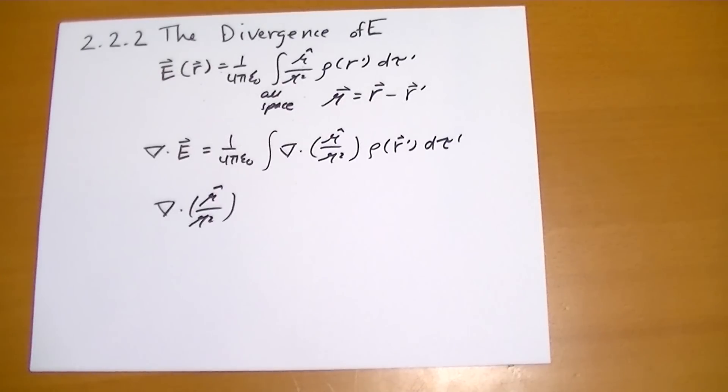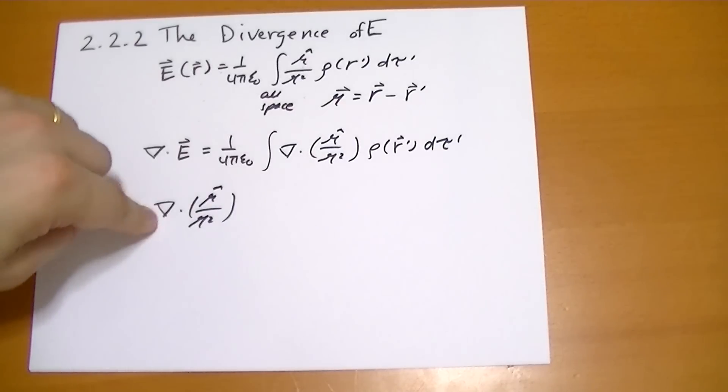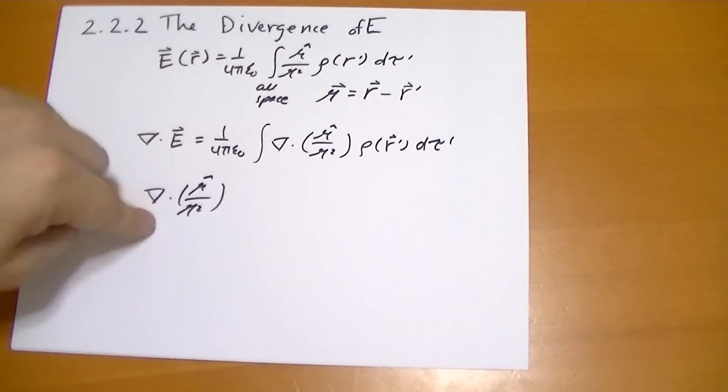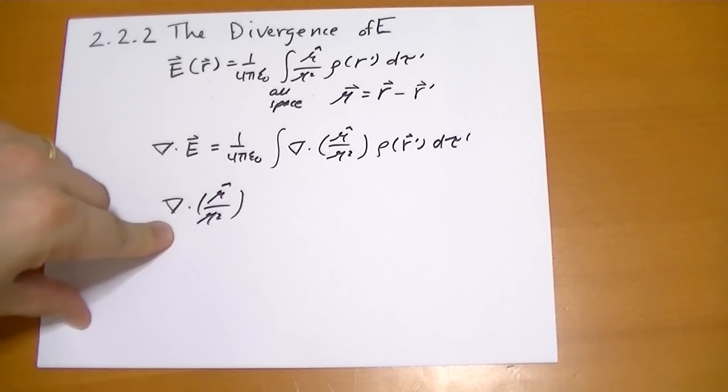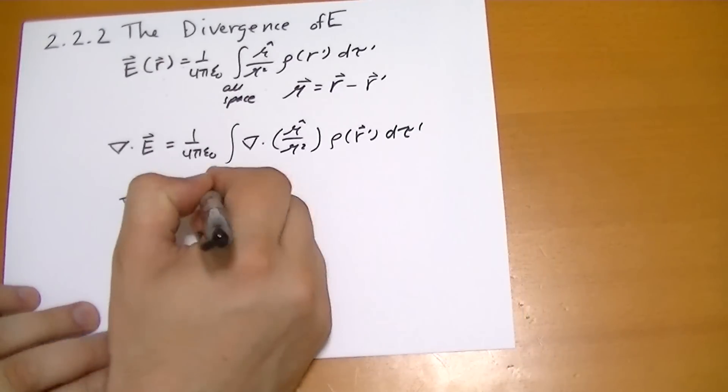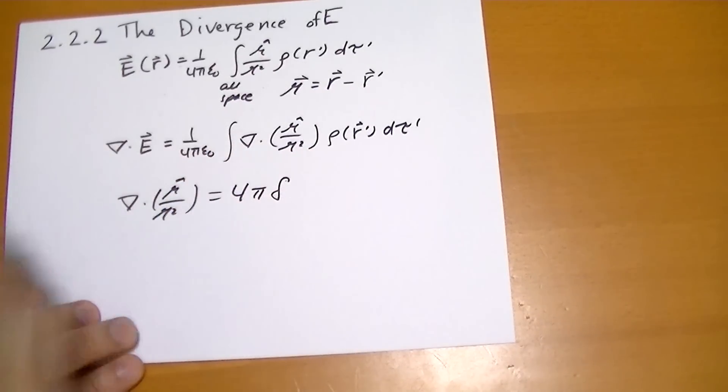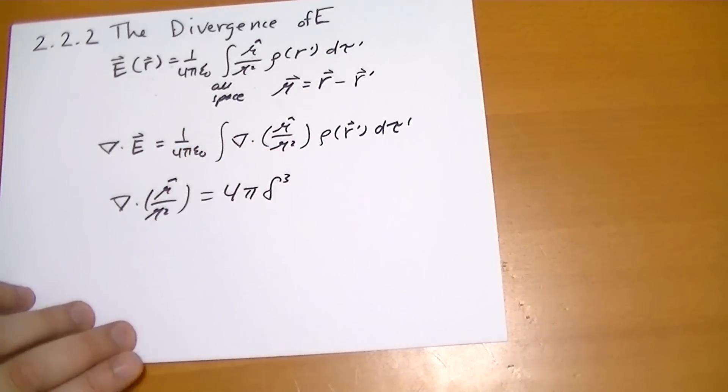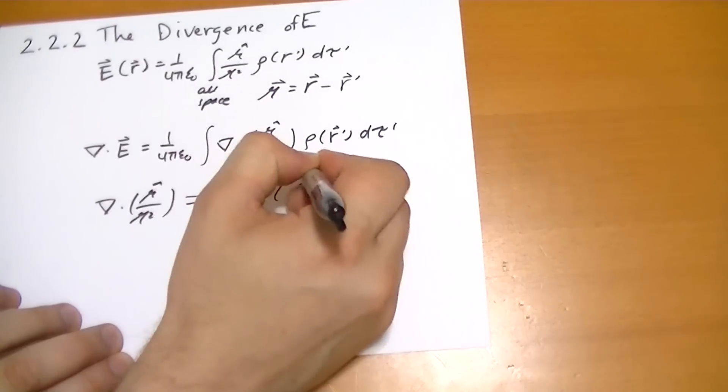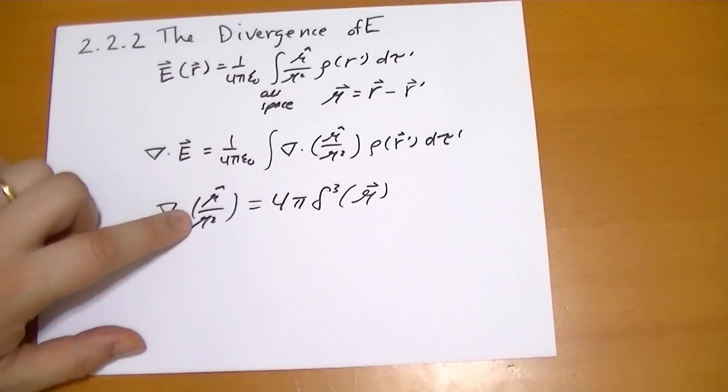So what is this divergence of r-hat over r-squared equal to? Well, if you remember, if you went through chapter 1 and I covered the Dirac-delta function, the principle that we used to even derive the Dirac-delta function was this particular divergence. This is what kind of motivated everything. And we found that this was equal to, out of necessity, 4 pi times the 3-dimensional Dirac-delta function of whatever vector it is that you're using to calculate this.